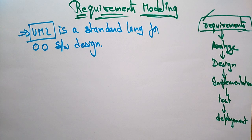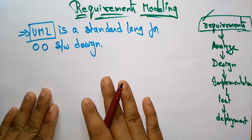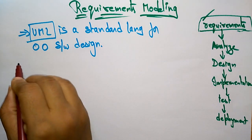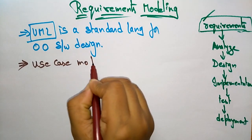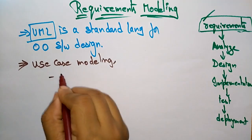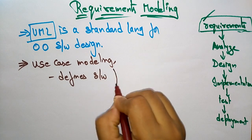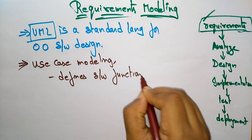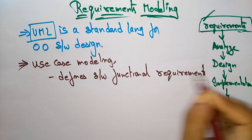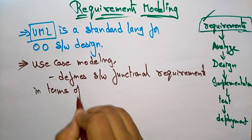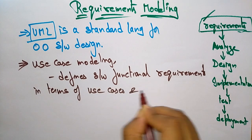The Unified Modeling Language has different models: use case models, activity models, static models, and dynamic models. Different models are used in UML, but requirement modeling will use only the use case model. Use case modeling defines the software's fundamental functional requirements — it defines functional requirements in terms of use cases and actors.